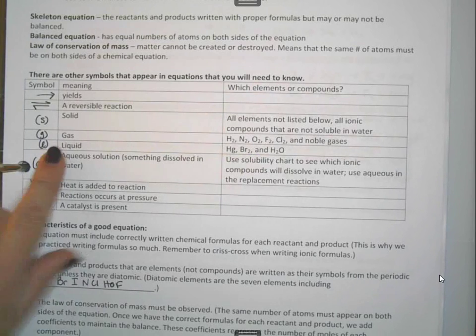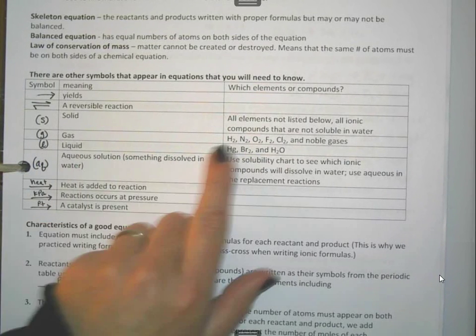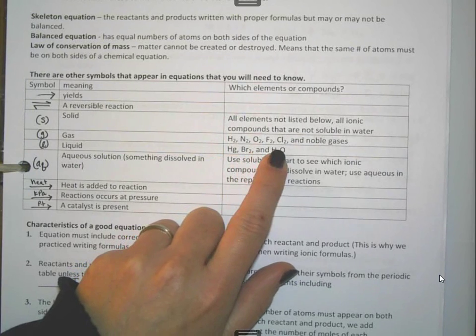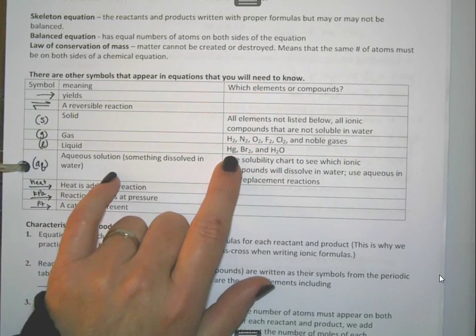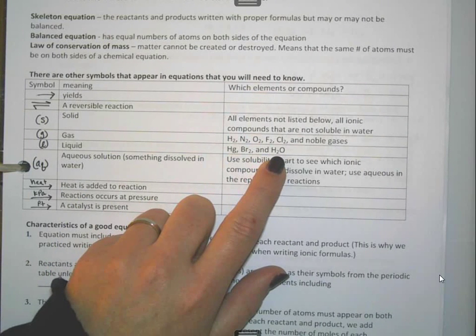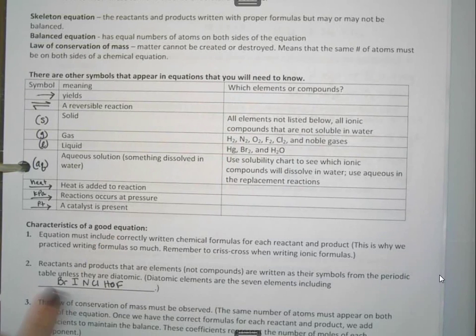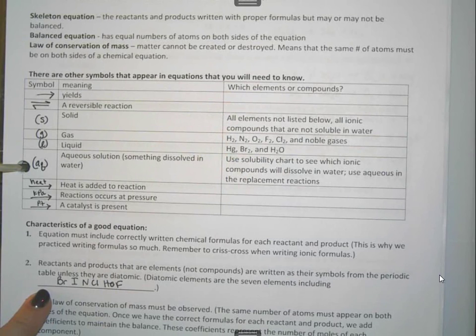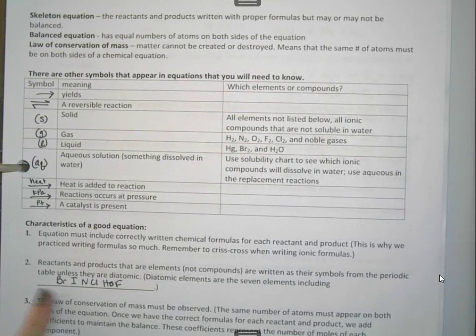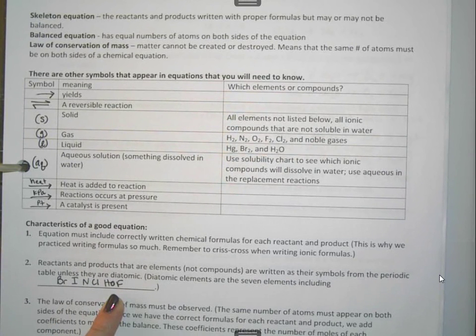Your gases are definitely hydrogen, nitrogen, oxygen, fluorine, chlorine, and all of the noble gases. Your liquids are mercury, bromine, and water. Now, a little bit lower down here, you'll see that I have the diatomic elements written out here, that everything that you write as an element has to be written by itself, just like it is off the periodic table, unless it's a part of these seven. I refer to this as Brinkelhoff.